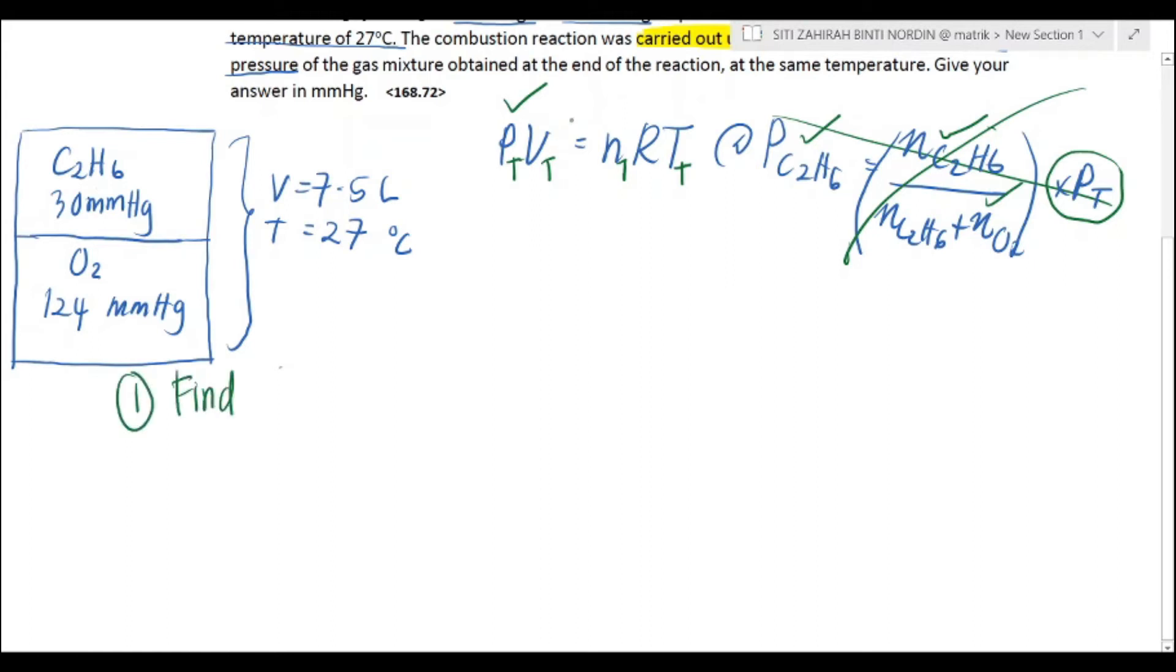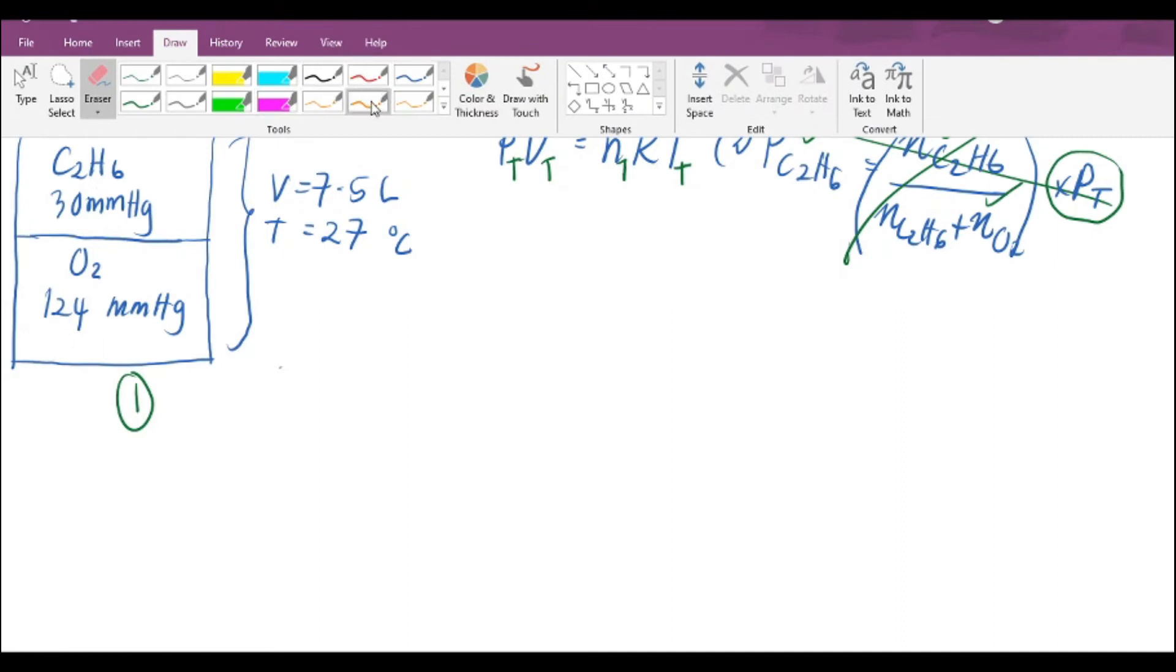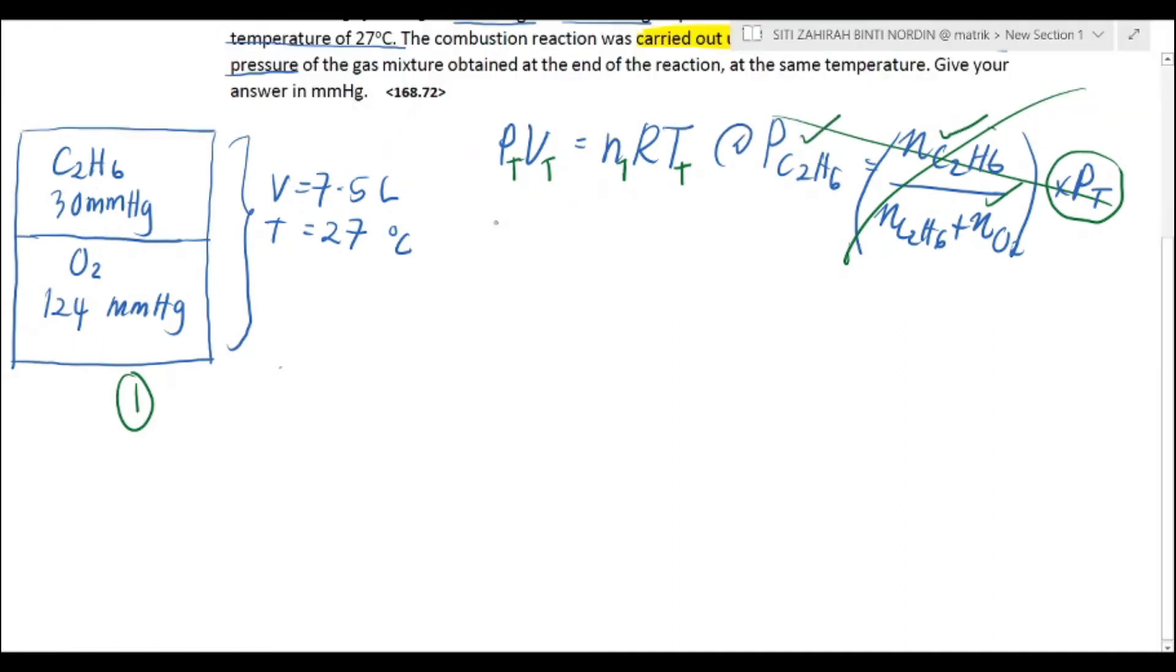First, check what we have in the ideal gas equation in order for us to find the total pressure. First, rearrange your ideal gas equation. We want to find PT. So, mol total times RT divided by volume total.